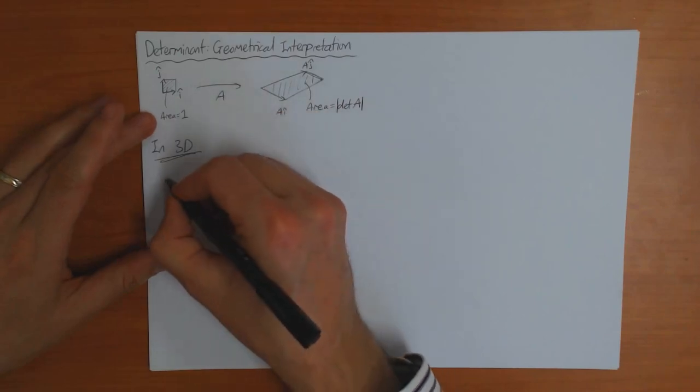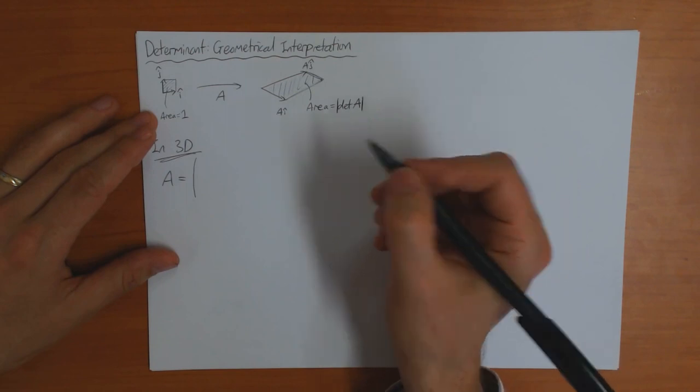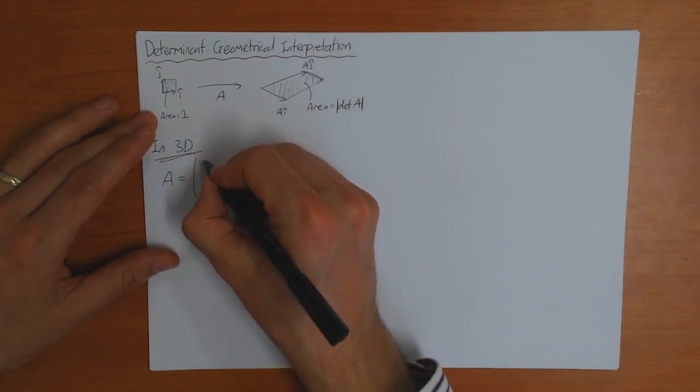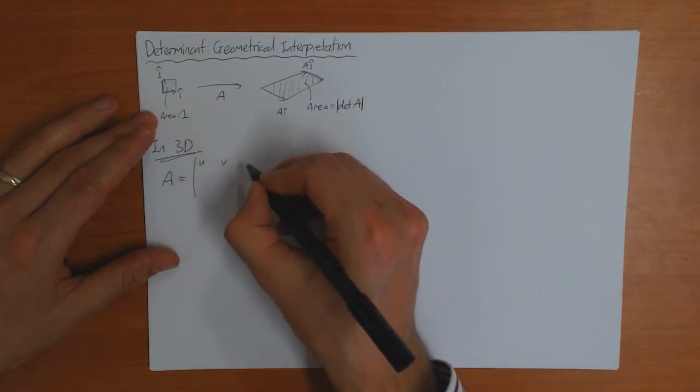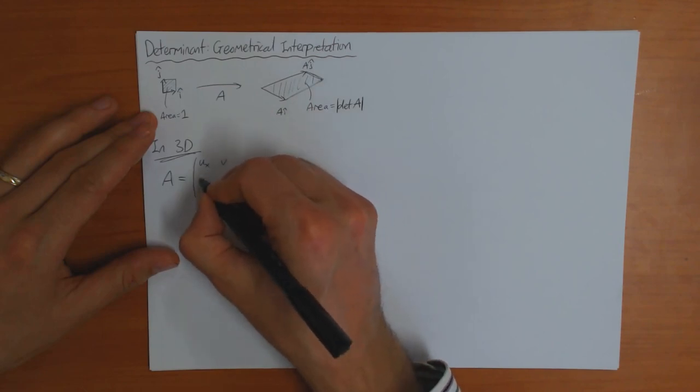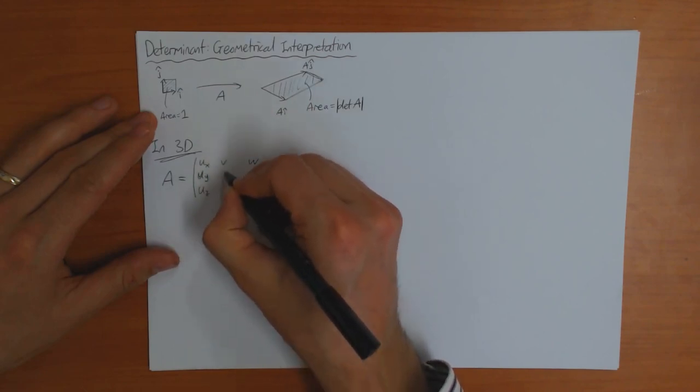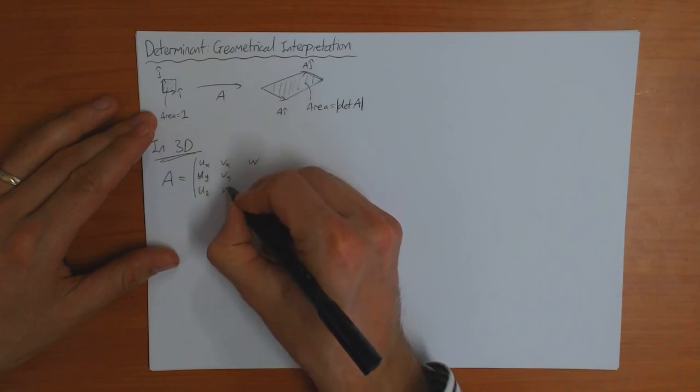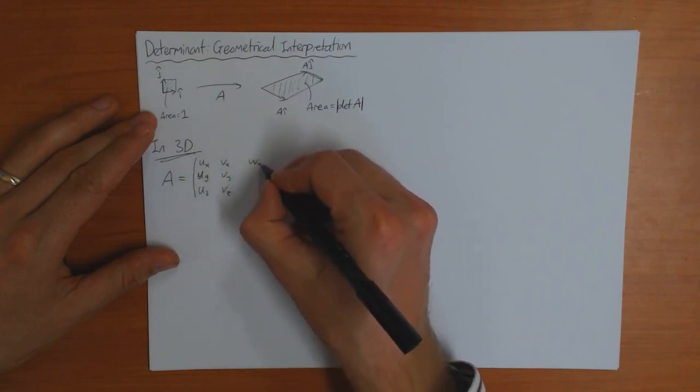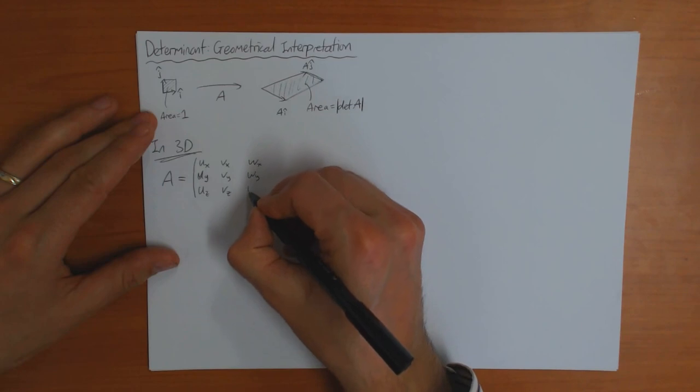So first of all, suppose I've got a matrix A. I can imagine this matrix A is being made up as three vectors, which I call U and V and W. So this is UX, UY, UZ, VX, VY, VZ, WX, WY, WZ.